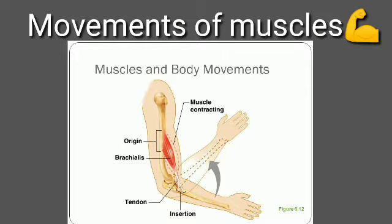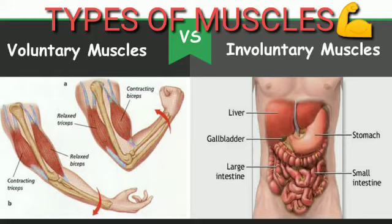About 30 muscles are present in the human face. They help in showing expressions. So you understood the importance of movements of muscles. Types of muscles. Muscles are mainly of two types: voluntary muscles and involuntary muscles.